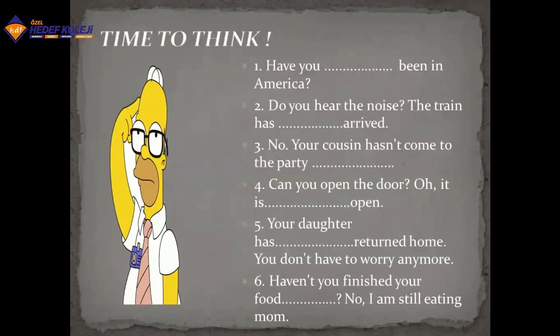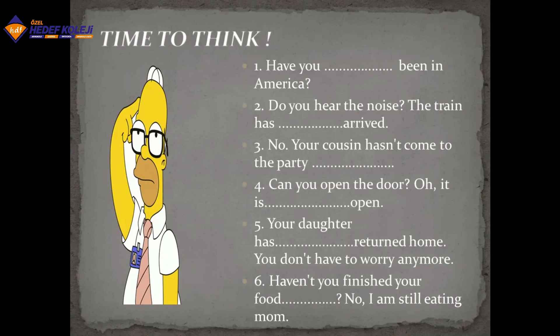Let's do the activity. 'Have you ever been to America?' — it's a question, so we use 'ever'. 'The train has already arrived' — it's in the middle, so 'already'. 'Your cousin hasn't come to the party yet' — it's negative, so 'yet'. 'It is already open' — it's between 'is' and 'open', so 'already'. 'Your daughter has already returned, you don't have to worry.' 'Haven't you finished your food?' — it's negative and a question, so 'yet'.